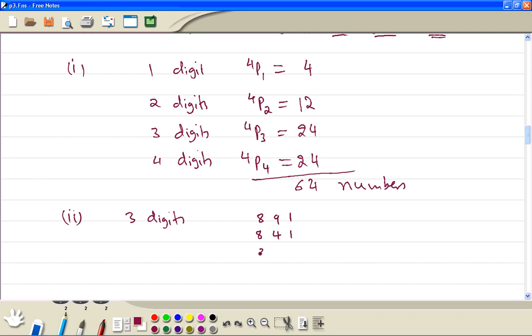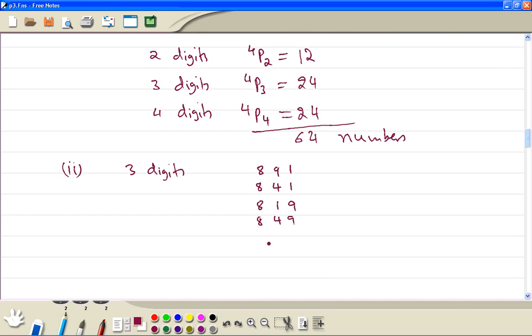Or we can still start with 8, we are finishing with 9, so that can have 1 in the middle or 4 in the middle. So in the middle we can have 4, or we have in the middle 8. So there are 6 different numbers.